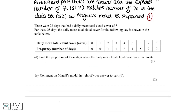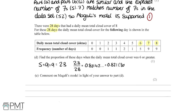There were 28 days with a daily mean total cloud cover of 8, and the cloud cover for the following day is shown in a table. Part D asks for the proportion of these days when the following day's cloud cover was 6 or greater. Adding up values for 6, 7, and 8 gives 5 plus 9 plus 9, which equals 23 out of the 28 days. So the proportion is 23 over 28, which equals 0.821 to 3 decimal places. We get one mark for the correct proportion.